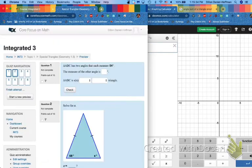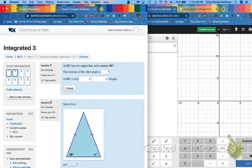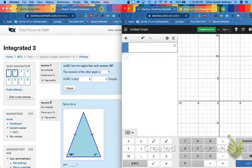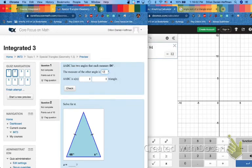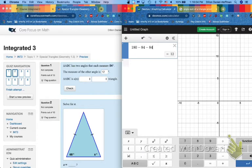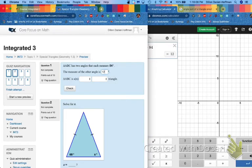We have eight problems starting with the first one. Triangle ABC has two angles that each measure 84 degrees. The measure of the other angle is blank. We know from before to start with 180, and if we have two angles that each measure 84, we go minus 84 minus 84, and our answer is there. Remember to use the numbers in your problem.